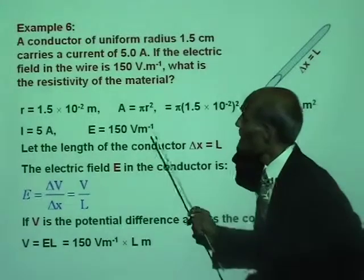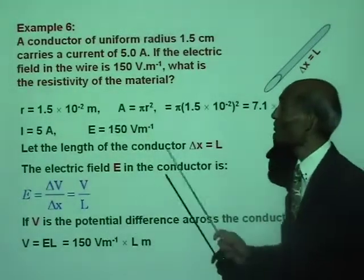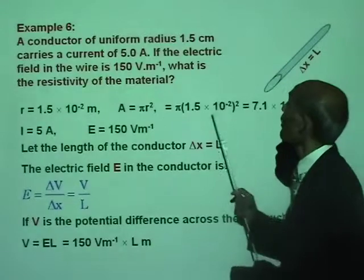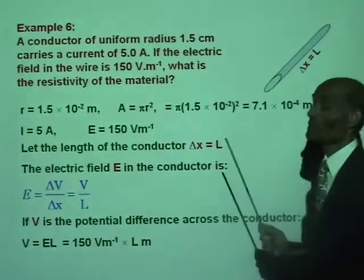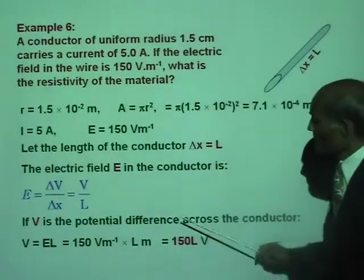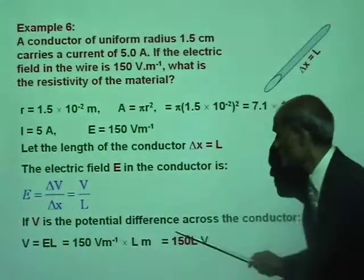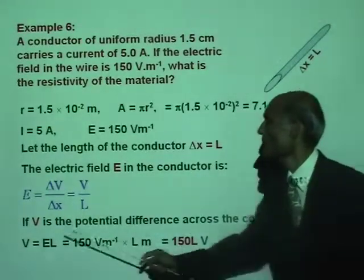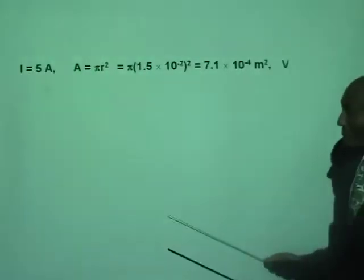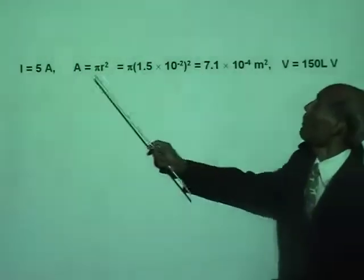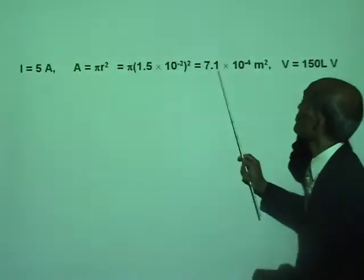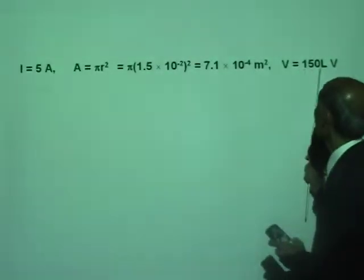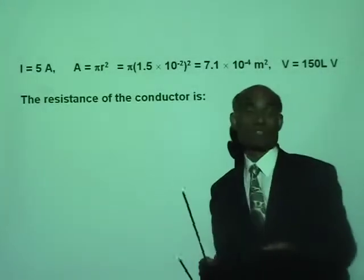We can also obtain an expression for the resistance. Resistance involves the length and the area of cross-section. The potential difference V equals 150 L volts — so 150 L is the potential difference. We now know all these values: the area of cross-section is 7.1 times 10 to the negative 4 meter squared, and the potential difference between the ends of the conductor is 150 L volts.